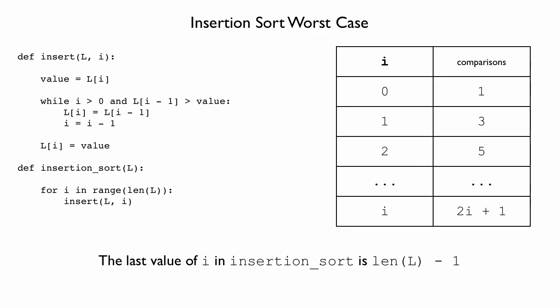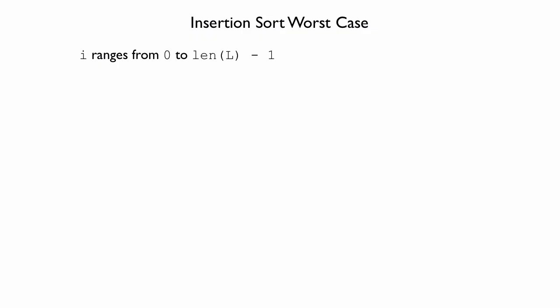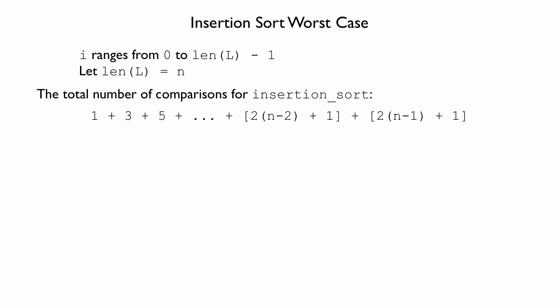Now let's find out how many comparisons we make in total for the entire run of insertion sort in the worst case. We've established that i ranges from 0 to length of the list minus 1. Let's call the length of the list n. The total number of comparisons looks like this: when i is 0 there's 1 comparison, when i is 1 there's 3, and so on all the way down to 2 times n minus 1 plus 1. This is the last iteration of insert.